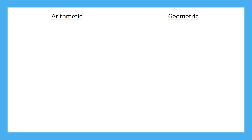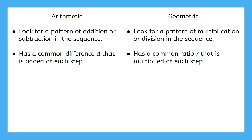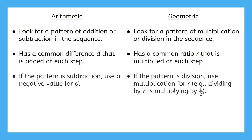Before we ramp up our practice, let's make sure we're clear on the differences between arithmetic and geometric. To identify an arithmetic sequence, look for a pattern of addition or subtraction. For geometric, look for a pattern of multiplication or division. Arithmetic sequences have a common difference d that's added at each step, whereas geometric sequences have a common ratio r that is multiplied at each step. If an arithmetic sequence has a pattern of subtraction, use a negative value for d. And if a geometric sequence has a pattern of division, use multiplying by a fraction for r — for example, dividing by 2 is the same as multiplying by 1 half.